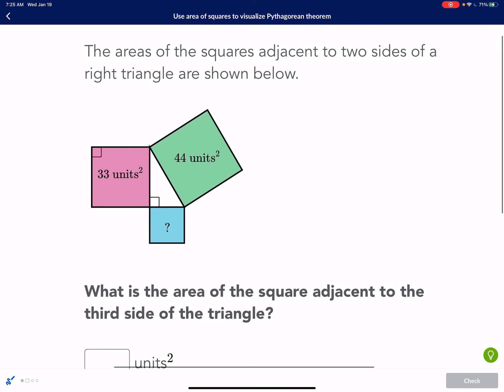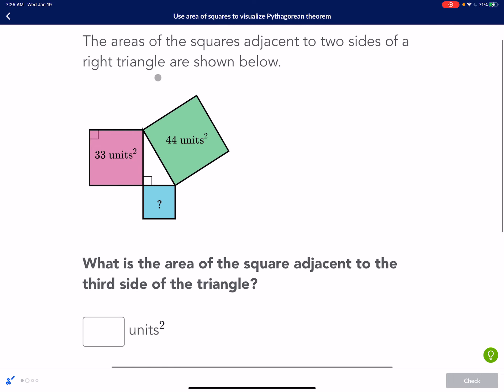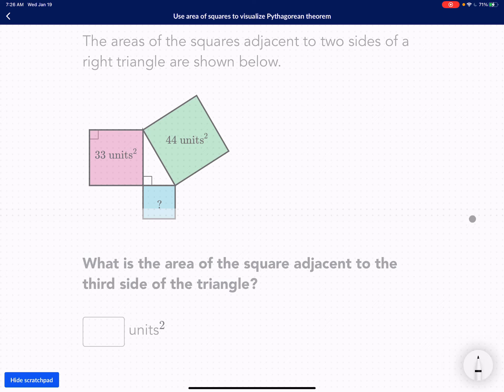All right, let's try this one. We're trying to find the area of this now. So remember, it's going to be this area plus this area is equal to 44. So we can put it into algebra like this. We can go 33 units, plus some number which we don't know, is equal to 44. And this is A squared plus B squared is equal to C squared.